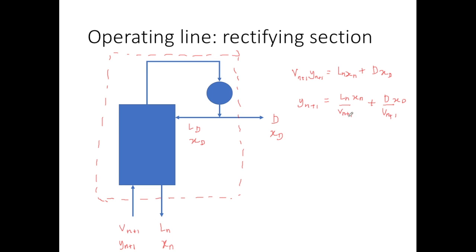We can substitute VN+1 by conducting a general mass balance on this section: VN+1 equals LN plus D. Substituting this into the equation gives us the final rectifying section operating line: YN+1 = (LN / (LN + D)) × XN + (D × XD) / (LN + D).